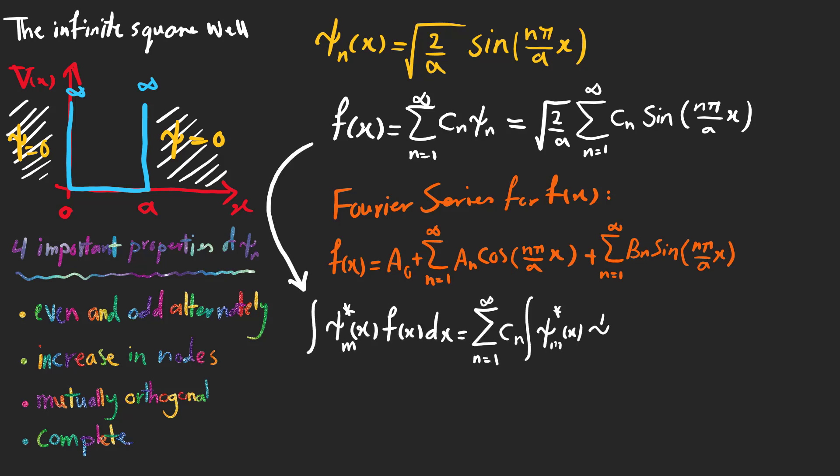Multiplying f(x) by psi_m(x) conjugate and integrate with respect to x, we can find the coefficient c_m. So this is how we find the coefficients for the expansion of f(x) based on our states.